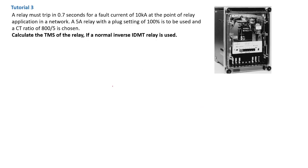Welcome back to Simtech channel, this is Chad from Simtech. This is Tutorial 3 on IDMT relay calculations. In this tutorial, a relay must trip in 0.7 seconds for a fault of 10 kilo-amps, where the fault is located at the point where the relay is on the network. We have a 5-amp relay nominal current, and the plug settings are set at 100 percent.